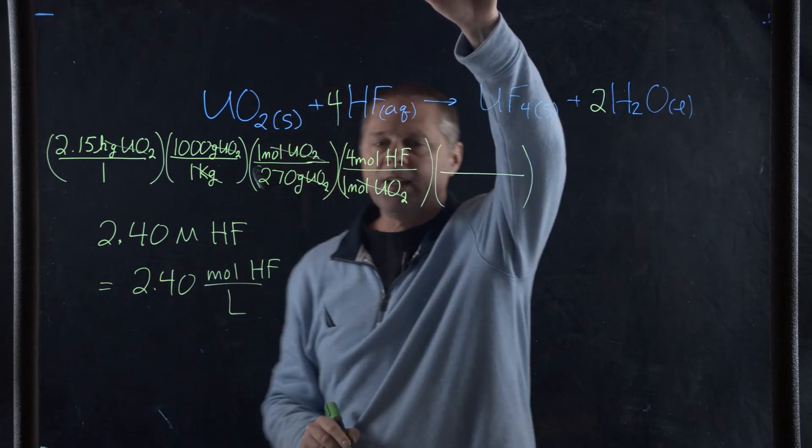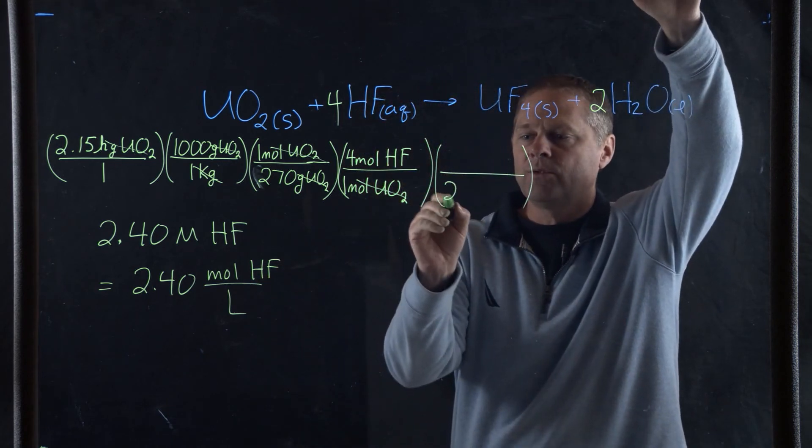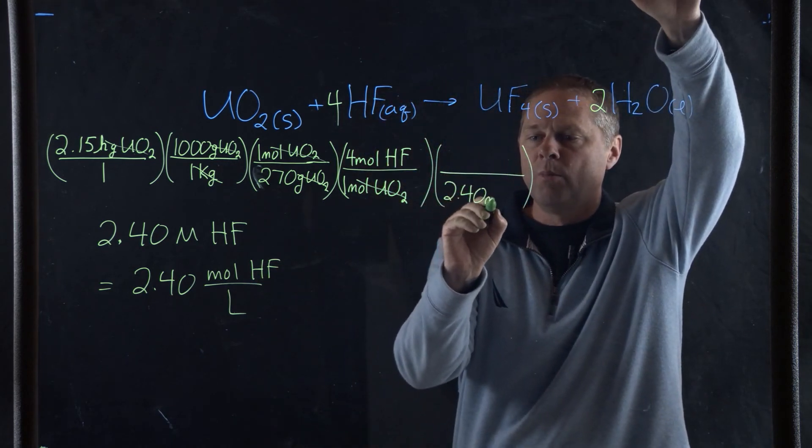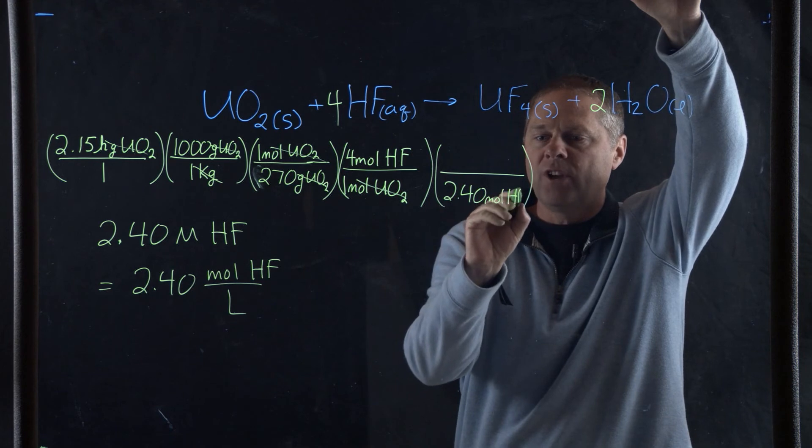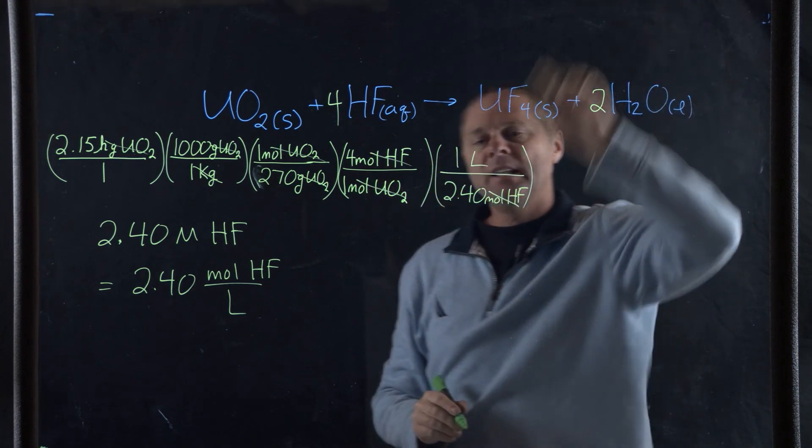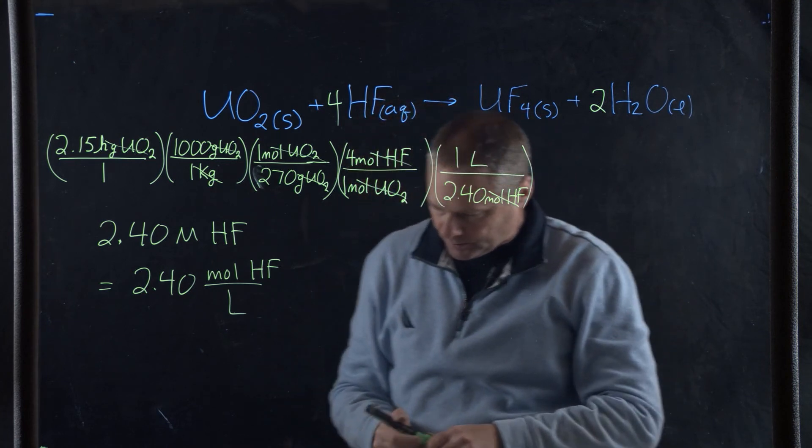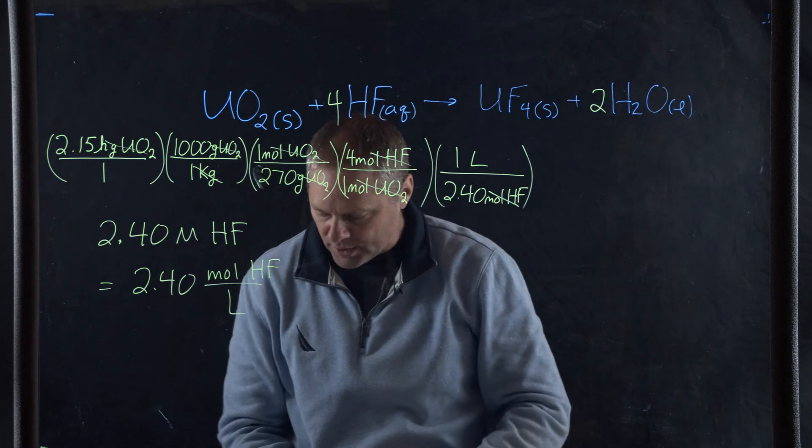If we divide by our concentration - we have 2.40 moles of HF for 1 liter - the moles will cancel and now we're in units of liters of hydrofluoric acid. We go through and do this calculation and what we come up with is 13.27 liters of the 2.4 molar HF solution.